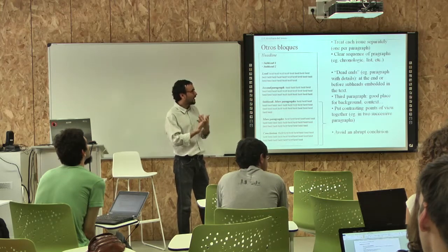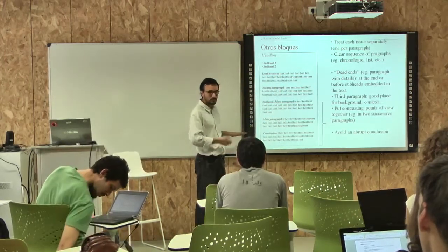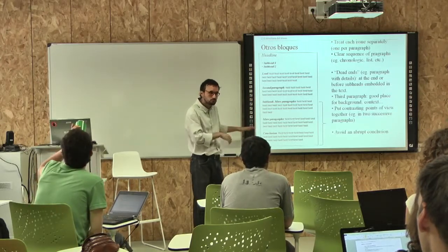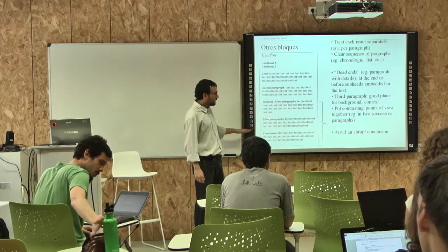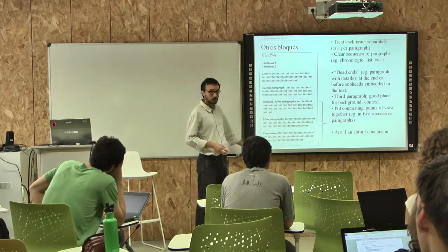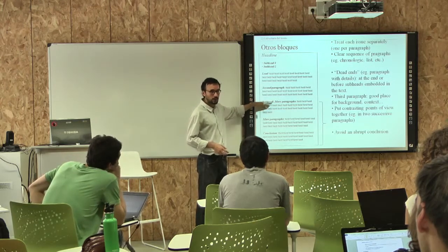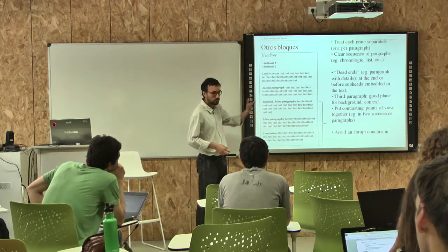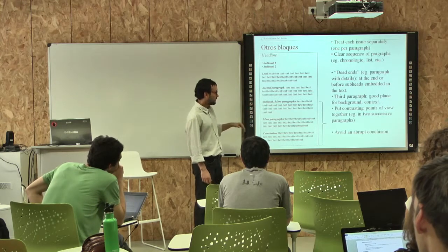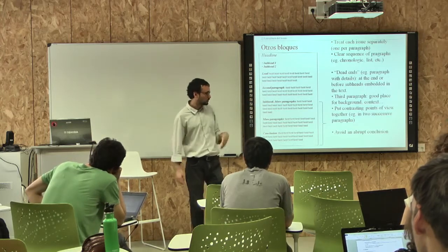Once you've given the main important information and introduced a quote and the second important piece of information, you can use the third block to give some context or background. Another element are the so-called dead ends — side things in your narration that need explaining. If these break the flow of the narration, it's better to put them at the end or before a subhead. In Spanish they're called ladillos — you make a deviation, then through the subhead you go back to the story. And obviously, avoid an abrupt conclusion.